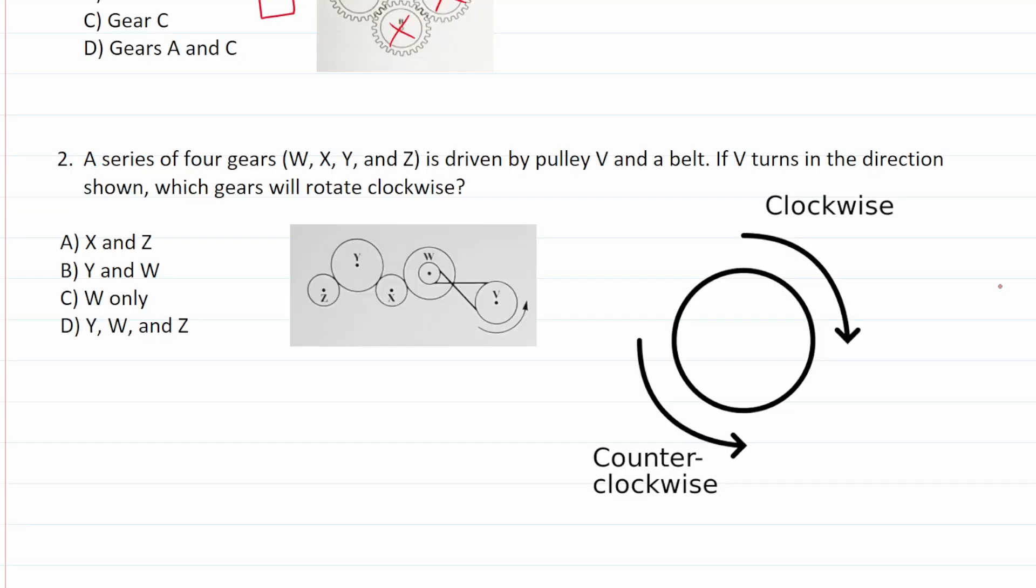Number two says a series of four gears, W, X, Y, and Z is driven by a pulley V and a belt. If V turns in the direction shown, which gears will rotate clockwise? So clockwise means the direction in which the hands of a clock move. You can see it's right there. If we look at gear V, we can see that it's moving counterclockwise. If we follow the pulley, we can see it comes around and spins gear W this way, which is clockwise. I'm going to put a C above that to indicate that gear W is spinning clockwise. We can see that this is spinning gear X this way, which is counterclockwise. Gear X is spinning gear Y this way, which is clockwise. And finally, gear Y is spinning gear Z this way, which is counterclockwise. So as you can see, only gear Y and gear W are spinning clockwise. So this one is Y and W. The answer choice is B, of course.